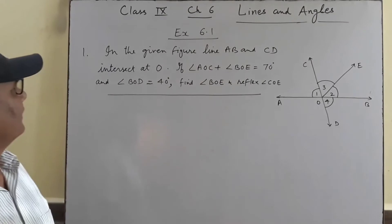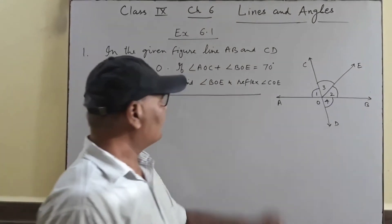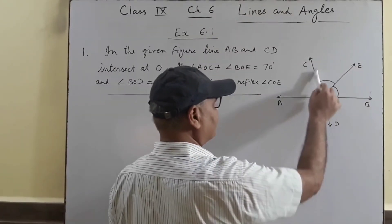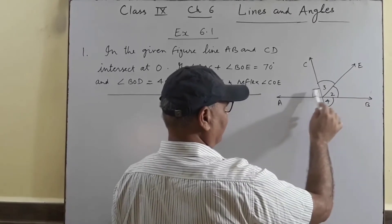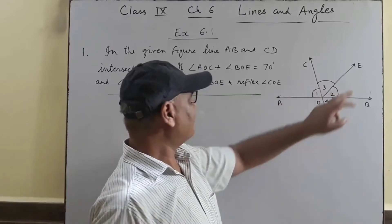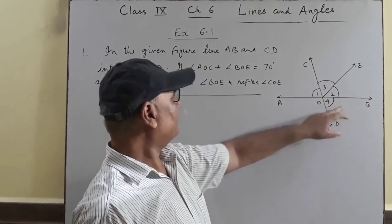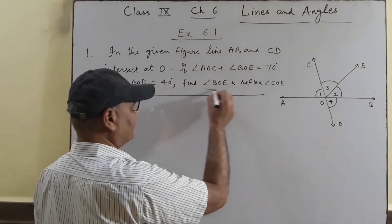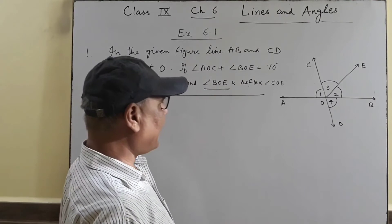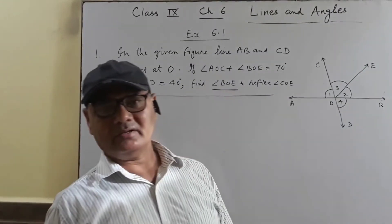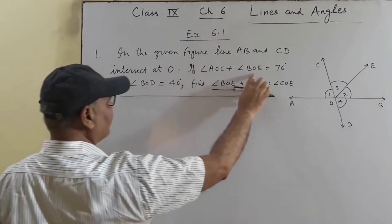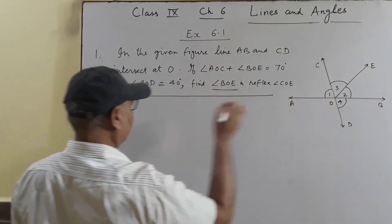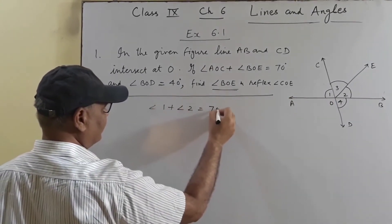Let's start with problem number 1. We are given a figure in which lines A and C intersect at O. Angle AOE and angle BOE are given, with the sum of these two angles being 70 degrees. Angle BOE is 40 degrees. So angle 1 plus angle 2 equals 70 degrees — this is given. Angle 1 has value 40 degrees.